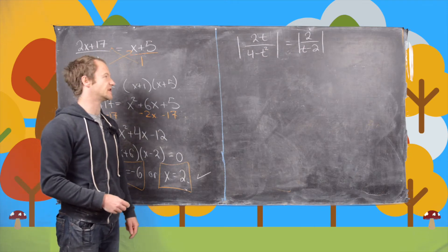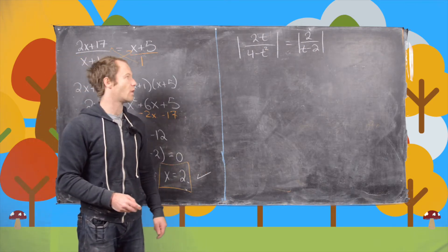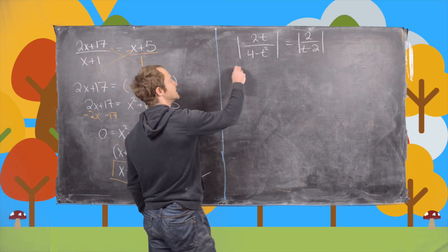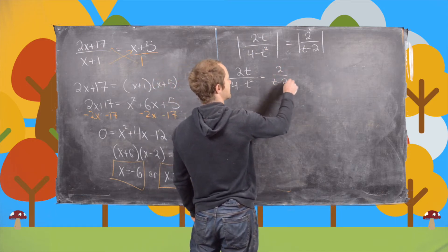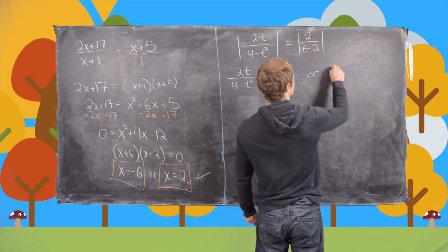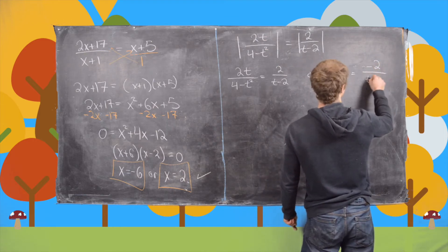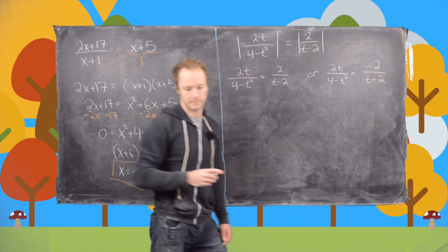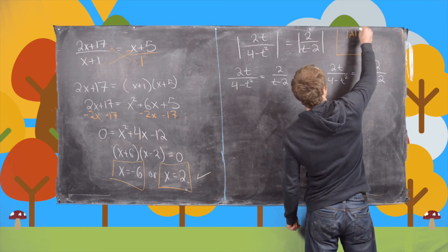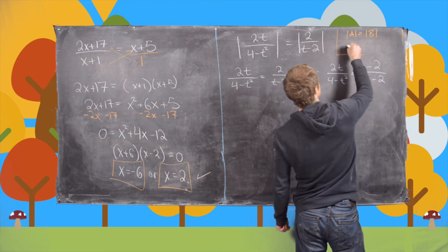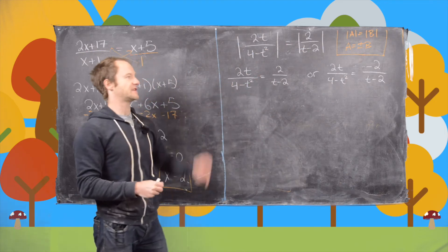Now let's move on to the next rational equation, which also involves an absolute value. The absolute value splits this one equation into two equations. We have 2t/(4 − t²) = 2/(t − 2), or 2t/(4 − t²) = −2/(t − 2). We're using the property that |a| = |b| implies a = ±b.